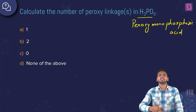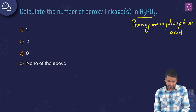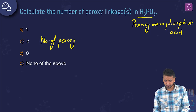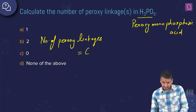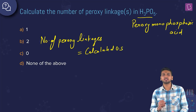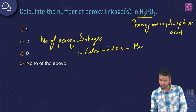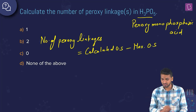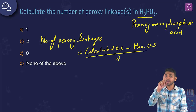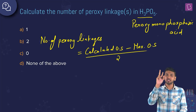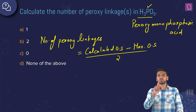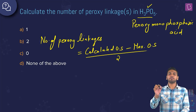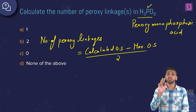But if we don't know the name and a new compound comes in front of us, how do we proceed? To calculate the number of peroxy linkages, there is a formula: number of peroxy linkages equals calculated oxidation state minus maximum oxidation state of the central atom, divided by two when there is one central atom. Here phosphorus is the one central atom.